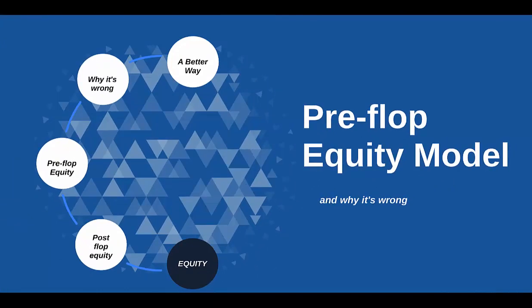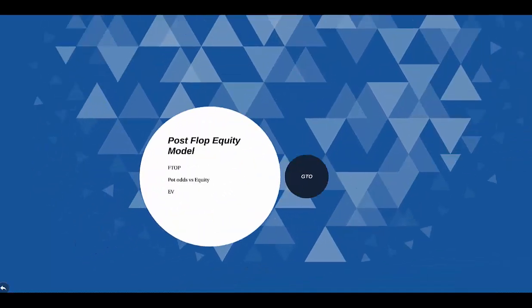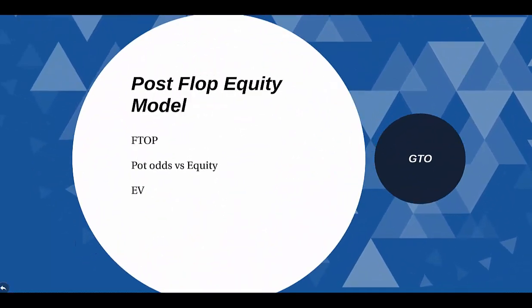Now I want to talk about post-flop equity a little bit before we start talking about what's wrong with the preflop equity model and why it doesn't really work that well. I think we should at least talk about post-flop equity because understanding and modeling your strategy based on your post-flop equity makes a little more sense — it still has many caveats — but it is pretty useful to know what amount of equity a hand has against a given range once you get to the turn and you're facing a bet. This is for sure an important concept.